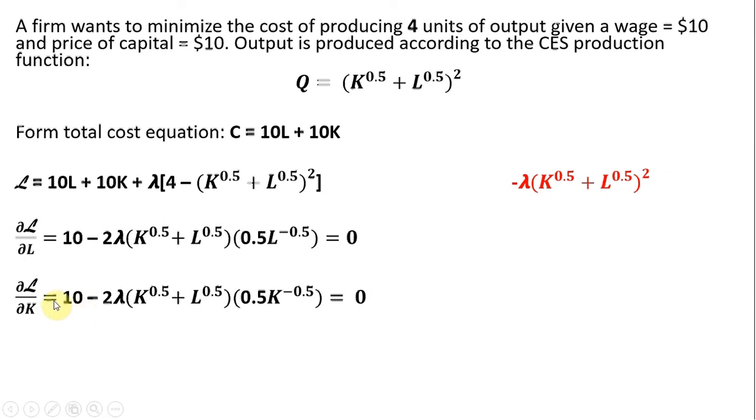We're going to take the partial derivative of the Lagrangian with respect to capital, a very similar partial derivative. The partial derivative of 10L is 0 in this case. The partial derivative of 10K is 10. And then we've got this lambda term touching 4, or being multiplied by 4. That will drop out, treat it as a constant.